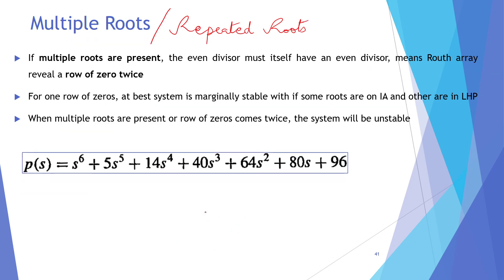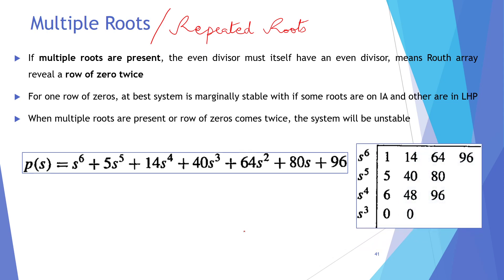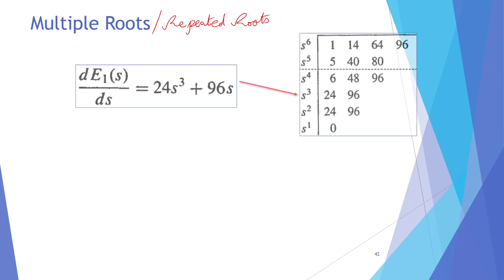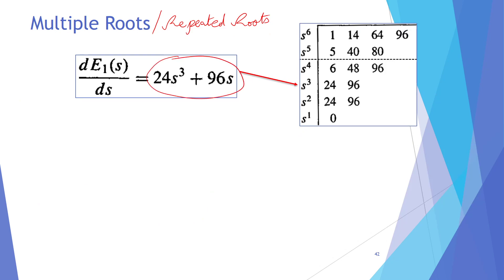For example, consider a given polynomial. We can see that a row of zeros appears — this means the S4 polynomial is the even divisor polynomial. The row of zeros appeared at the S4 row. Since S4 is the even divisor polynomial, to eliminate the row of zeros, we take the derivative of the even divisor polynomial with respect to s and replace those coefficients in the row of zeros.